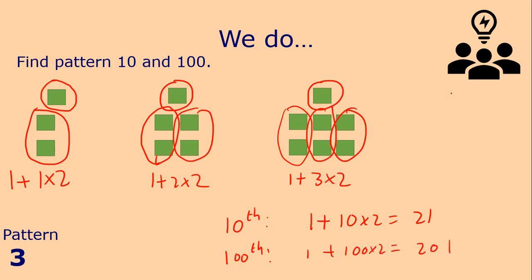So the tenth pattern would look something like this — you're going to have one block at the top and then all these blocks underneath it, giving you twenty-one in total.